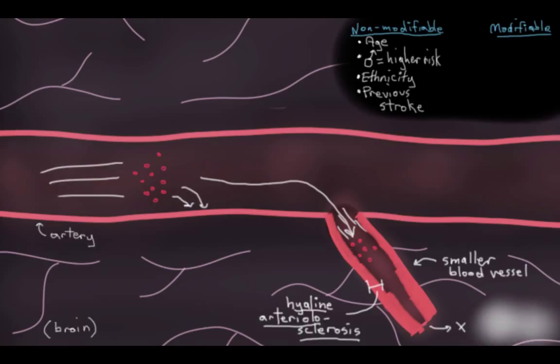Well, it's going to die off and you're going to have a stroke in that area. So that's the first way that hypertension is bad for your cerebral blood vessels. What's the other way?